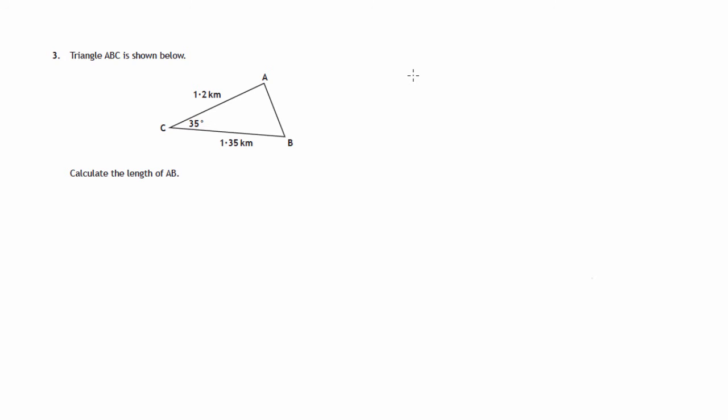This is question 3 from paper 2 of the 2015 National 5 SQA maths exam. We're given a triangle ABC, a couple of sides and the angle in between these two sides, and we're asked to calculate the length of the third side.